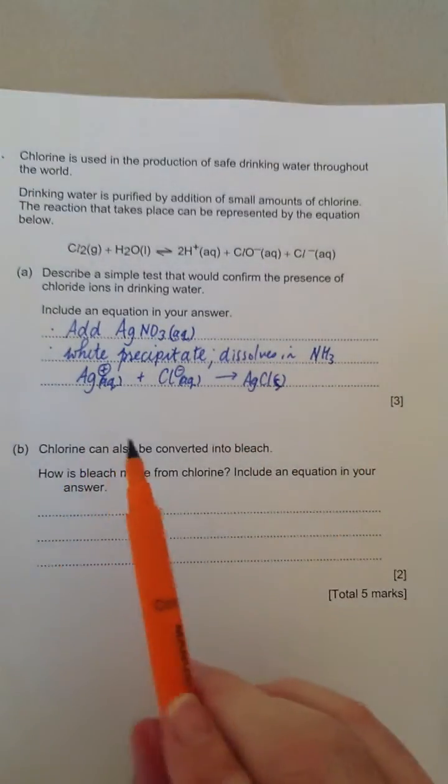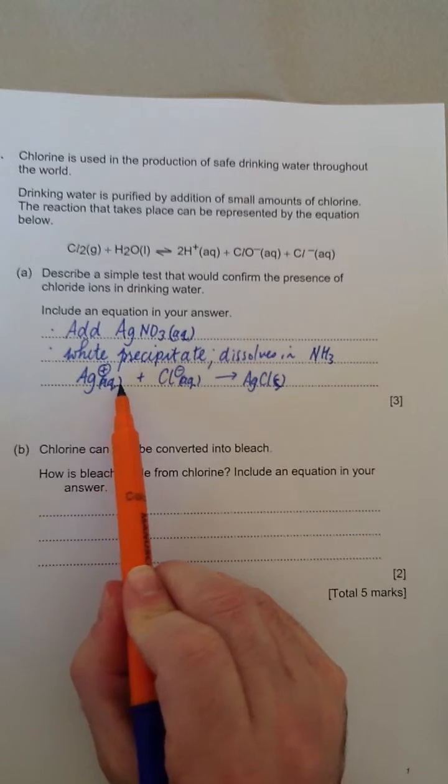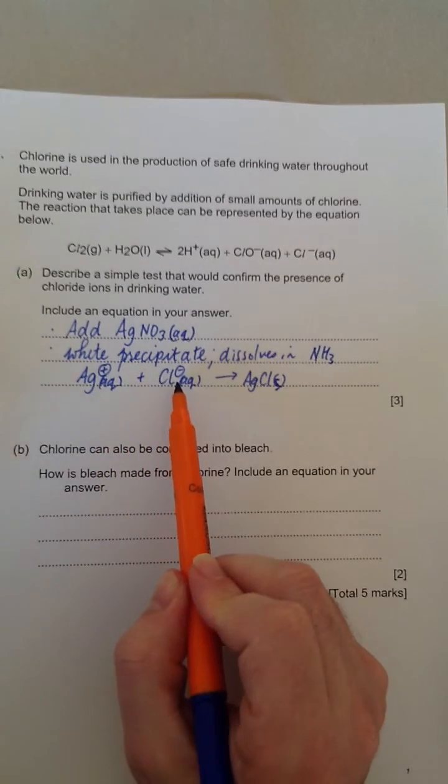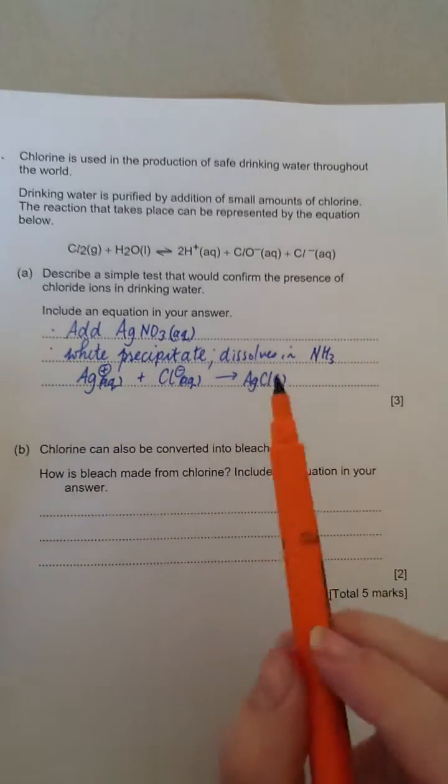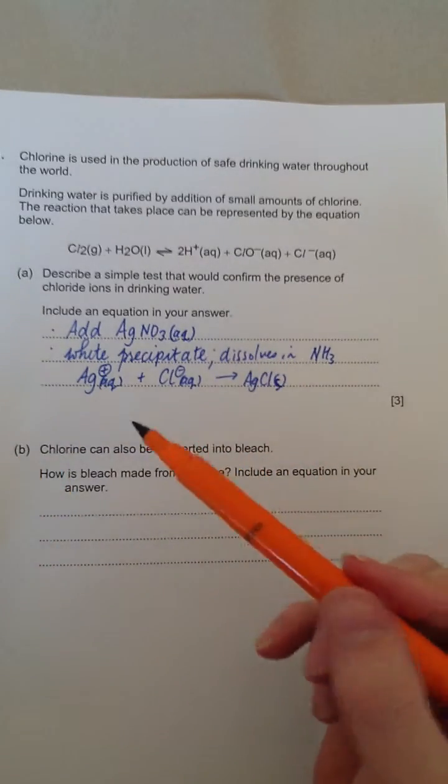You need to put the state symbols in to show that you know that the Ag plus is dissolved, it's aqueous. The Cl minus is dissolved, it's aqueous. And your product, your AgCl, is a solid. And that's what the white precipitate is.